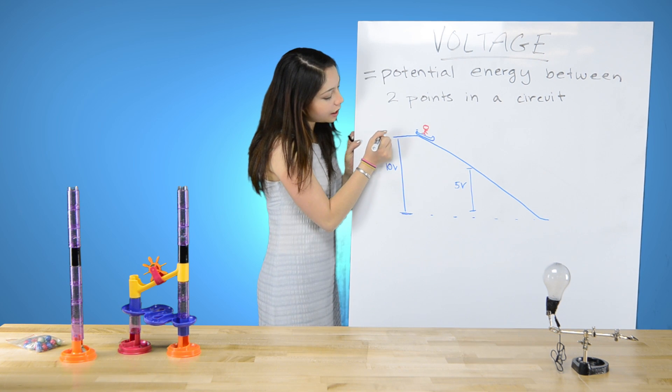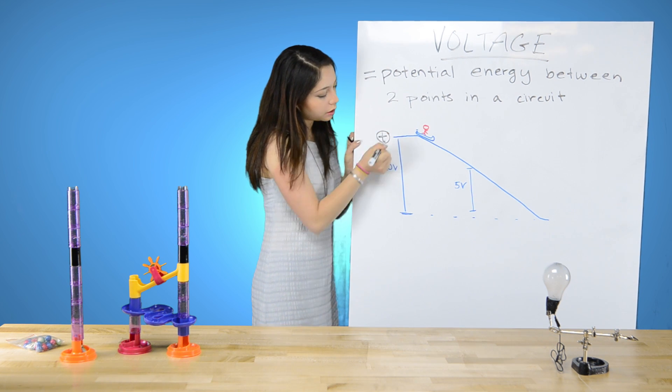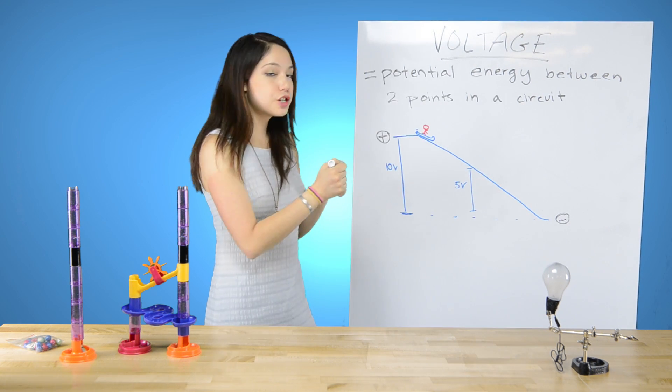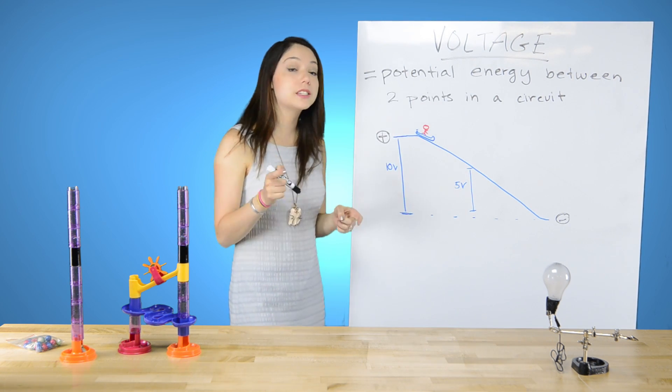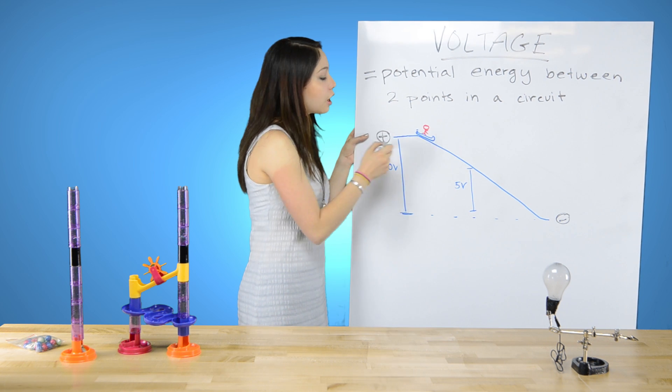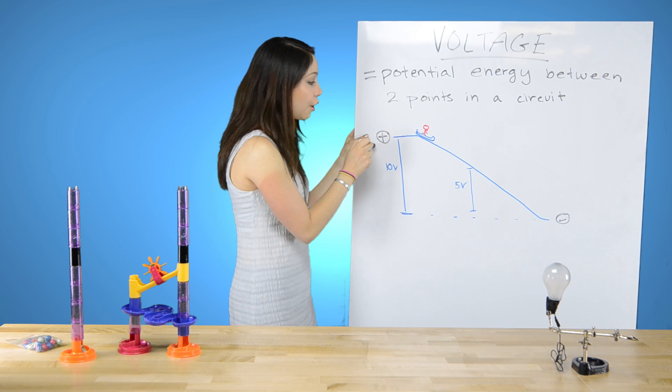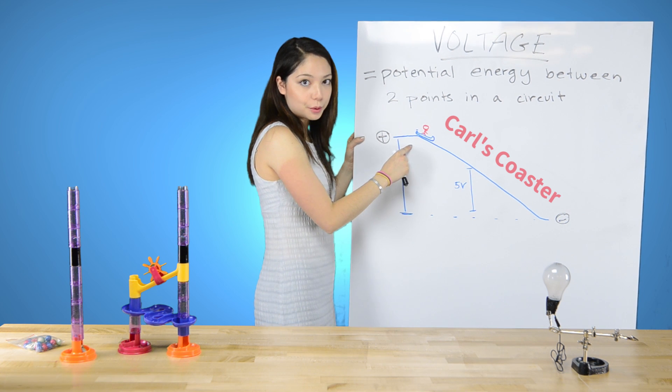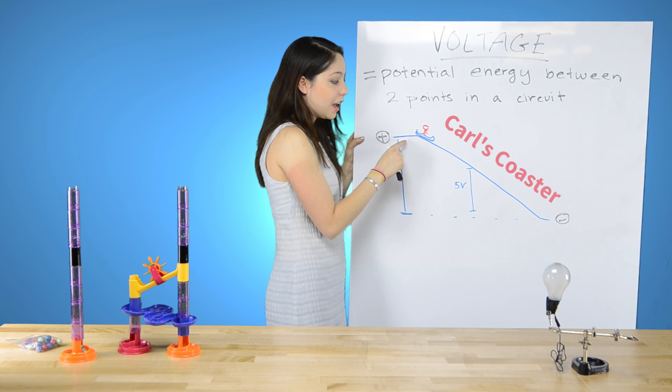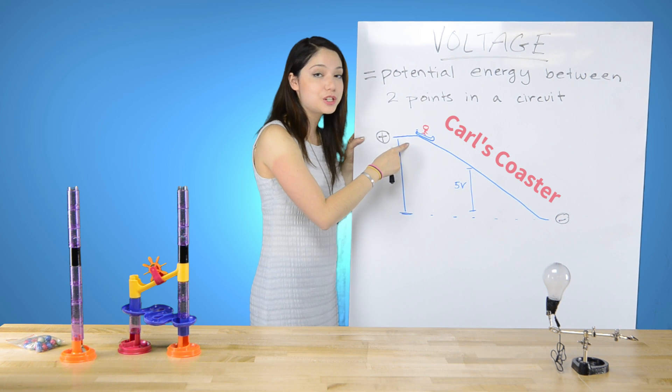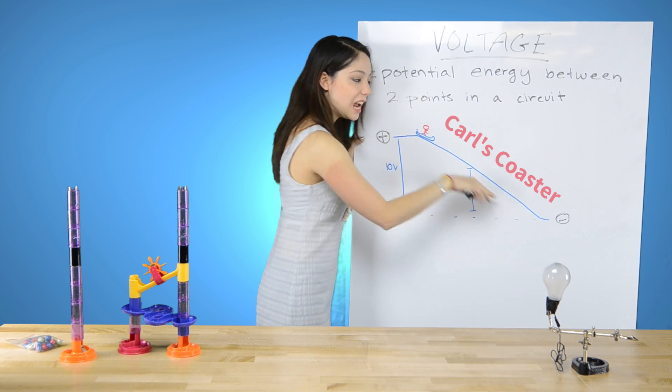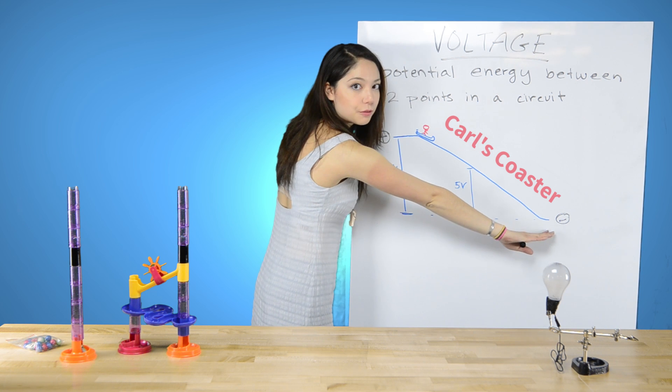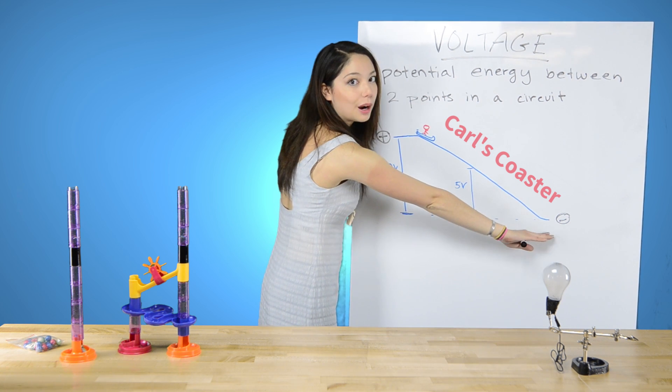So here's the positive end of your battery. And here's the negative end of your battery. And just like the drawing of the short circuit that I just did, your charge is going to flow, your current is going to flow from positive to negative. Carl gets on the roller coaster and he has 10 volts of potential energy. And then as he goes down the roller coaster, he expends that. And here he has zero volts of potential energy because he's at ground. He's at zero.